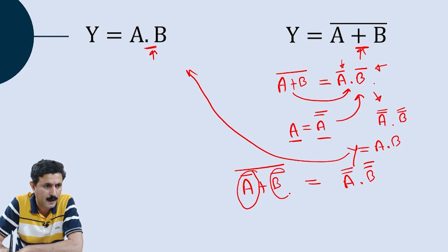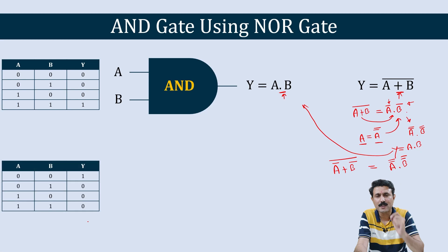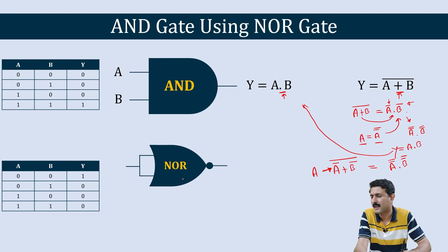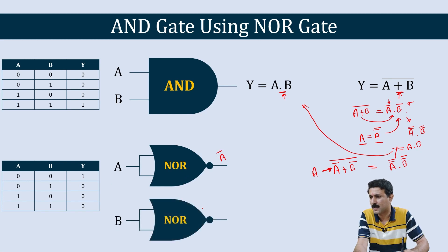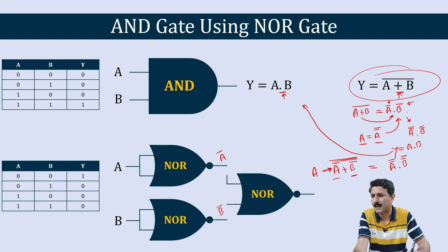The first step is to get A bar and B bar, and then take the whole bar. To get A bar, we use a NOR gate configured as a NOT gate — the same arrangement we just built. So this gives A bar from input A, and similarly B bar from input B. Now we have A bar and B bar ready. We then feed A bar and B bar into one NOR gate, whose output equation is (A bar + B bar) bar, giving us Y = A · B.